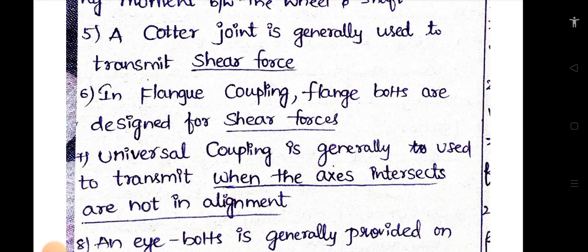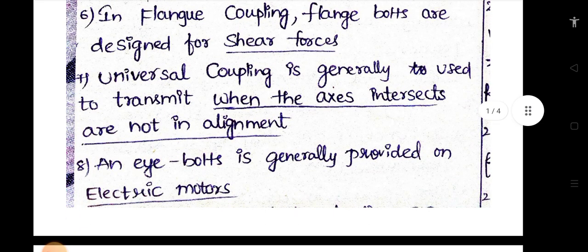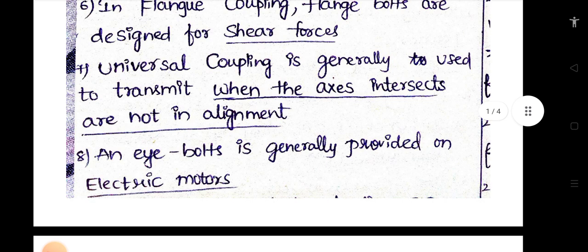Universal coupling is generally used to transmit when the axis intersects are not in alignment. An eye bolt is generally provided on electric motors. If you have a note, you will be able to show a screenshot.